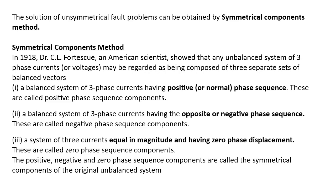One: a balanced system of three phase currents having positive, or normal, phase sequence — these are called positive phase sequence components. Two: a balanced system of three phase currents having the opposite or negative phase sequence — these are called negative phase sequence components. Three: a system of three currents equal in magnitude and having zero phase displacement — these are called zero phase sequence components. The positive, negative, and zero phase sequence components are called the symmetrical components of the original unbalanced system.